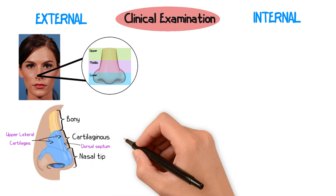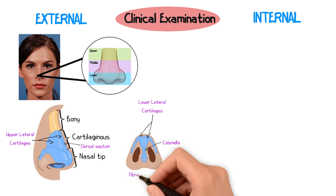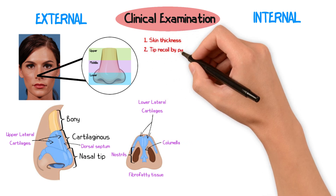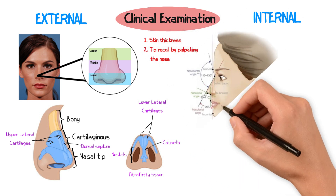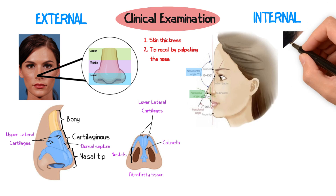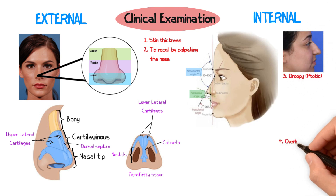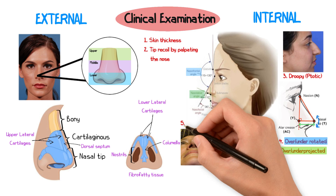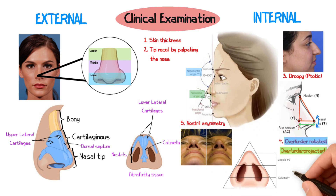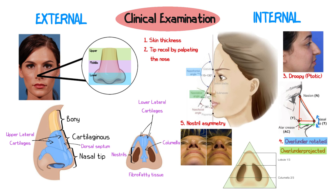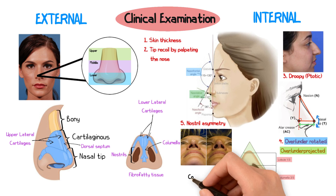The lower third, also called the nasal tip, comprises the lower lateral cartilages, the columella, the fibro-fatty tissue, and the nostrils. Comment externally on the skin thickness and the tip recoil by palpating the nose to assess support. The key angles to note are the nasofrontal and nasolabial angles. Comment on whether the tip is droopy or ptotic, and whether the nose is over- or under-rotated, or over- or under-projected. Comment on nostril asymmetry and the shape of the tip. Ideal proportions refer to the base of the nose as an equilateral triangle between the tip and alar bases, with a columella to lobule ratio of approximately two-thirds to one-third, and look closely for columella scars.